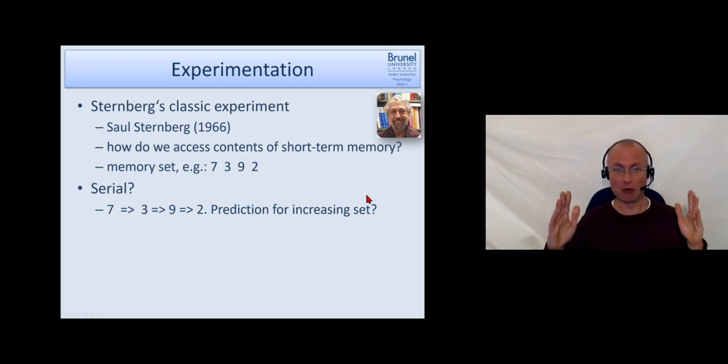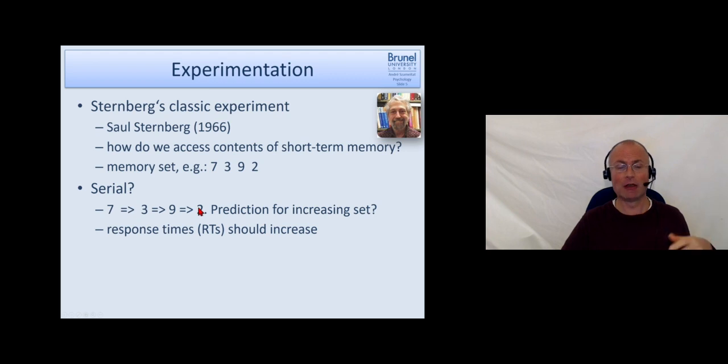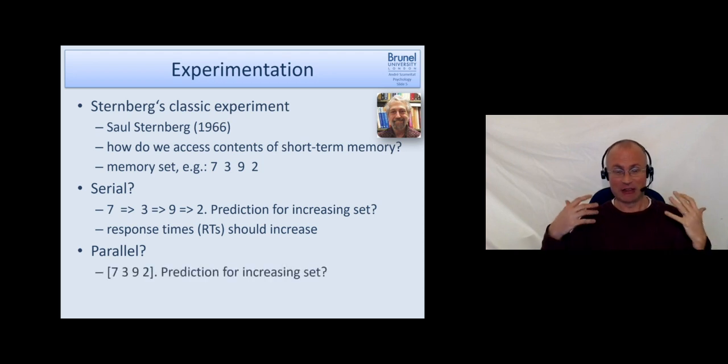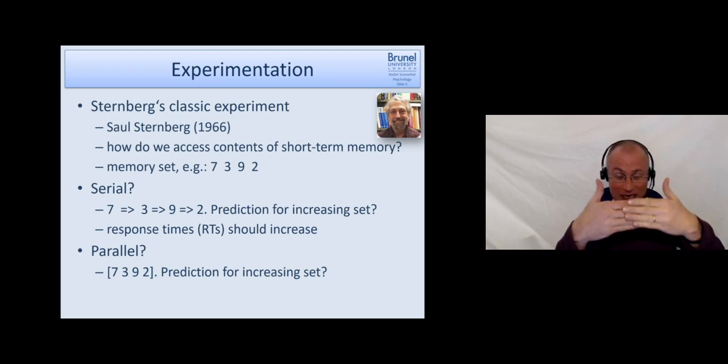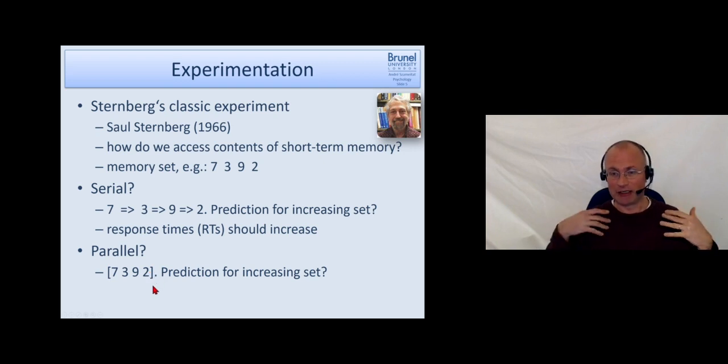This is you increase the set size. What would be the prediction when we have to search item by item serially? Yes, the prediction would be that response times should increase because every item takes a little bit of time, so the more items I have to search through, the longer it takes. The alternative theory was that the search in memory is parallel, that means you just look at it with your inner eye if you want to say, and you see it directly, so we don't have to go through that.